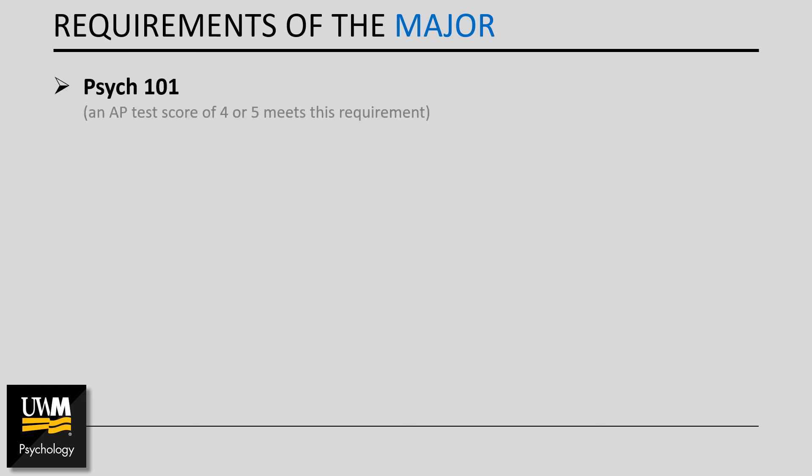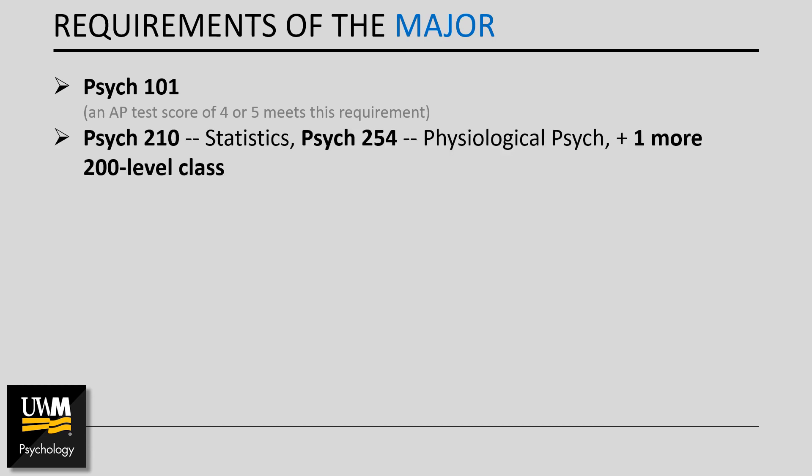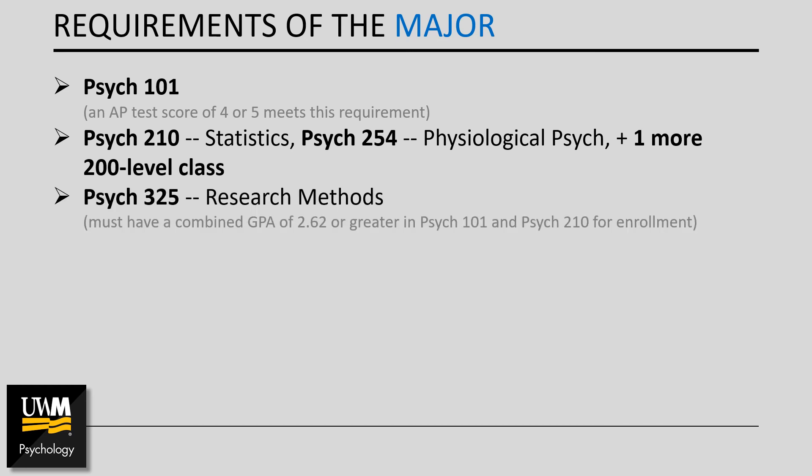Our flagship course, the one that you must complete before declaring the major, is Psych 101. Next, you'll complete some required lower division coursework in psychology, including Psych 210 — statistics — Psych 254, which is physiological psychology, and one more 200 level class of your choice. Another required course in the major is Psych 325, which is research methods. It's important to note that you must have a combined GPA of 2.62 or higher in Intro Psych and Statistics in order to enroll in research methods, which rounds out the entry level coursework for the major.